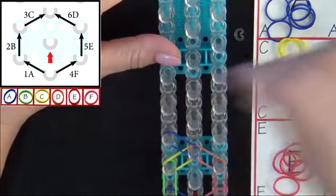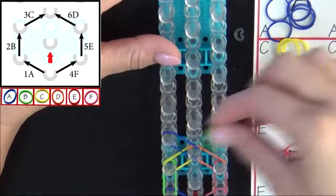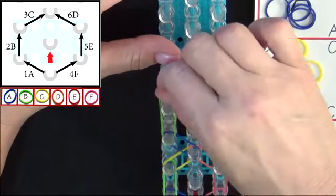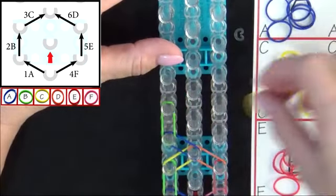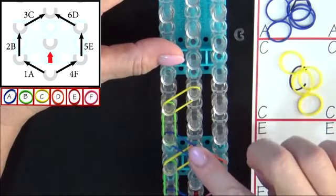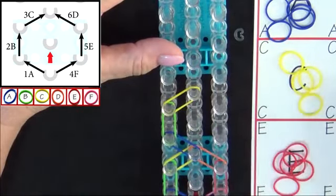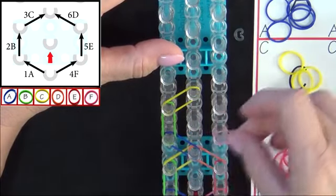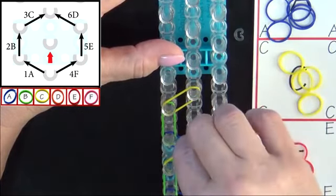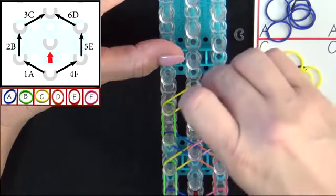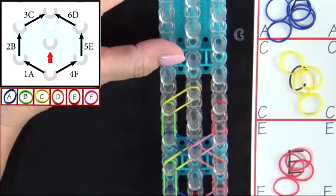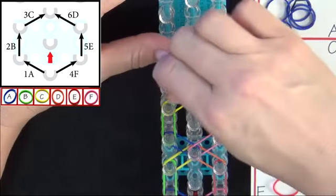And place 1A. 2B, go up the side, and 3C will turn into the center. Go back to the beginning. 4F, 5E, and 6D.